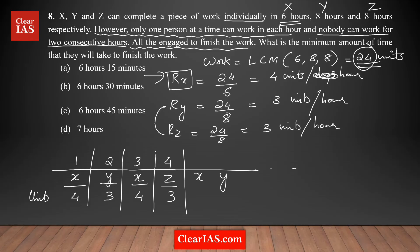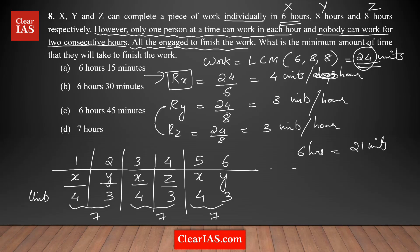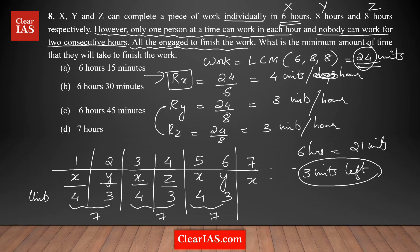Continuing the pattern: fifth hour X does 4 units, sixth hour Y does 3 units. We can see that every two hours, 7 units are completed. Over six hours, that's 7 × 3 = 21 units completed. The total work is 24 units, so 3 units remain. In the seventh hour, X works next. Since X completes 4 units per hour, X needs only 3 ÷ 4 of an hour to finish the remaining 3 units.